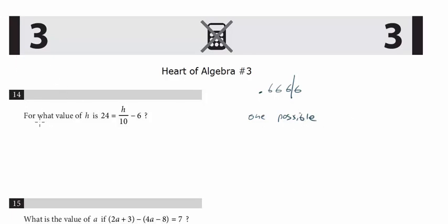So number 14 here, easy question. It's the first one, and we have to solve for h. And so all we really have to do here, remember, you want to do the addition and subtraction first and then clear the fraction. So we're going to add 6 to both sides. So we end up with 30 equals h over 10.